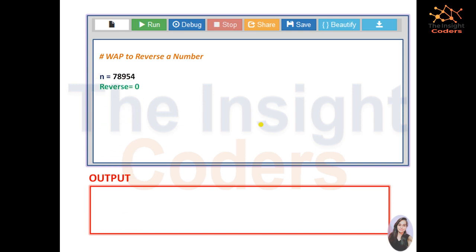So if we have to reverse a number, simply what we used to do, we take a number. You can also take this input from the user. Int input, reverse, a variable like just like sum as we have done in the last video.